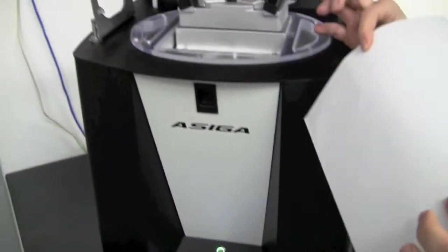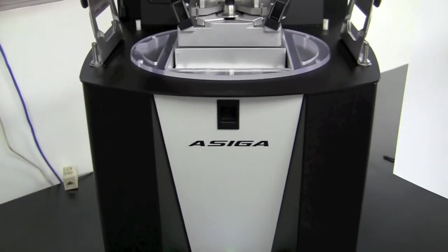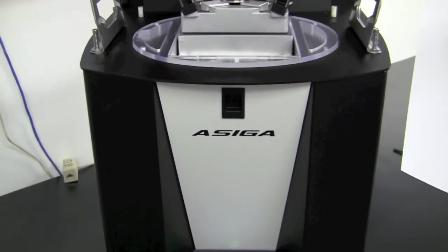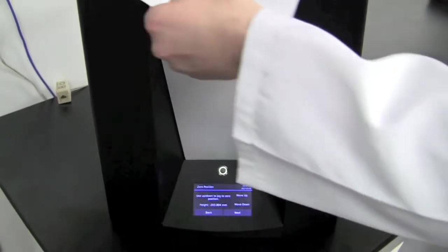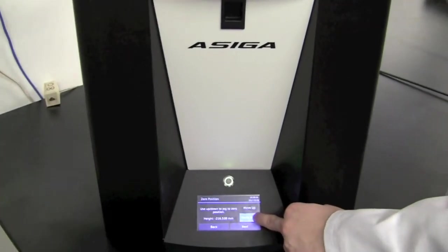From here, we will grab our white piece of copy paper. We are going to move the build plate up. We are going to slide the piece of paper underneath. Then we will move the build plate back down.